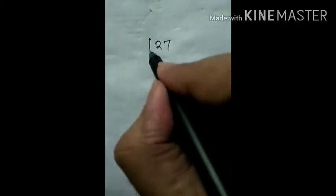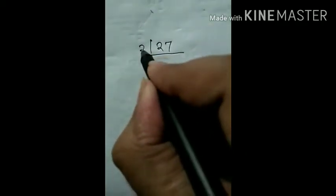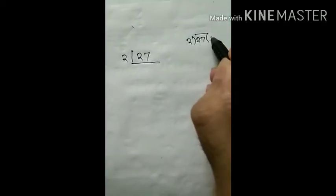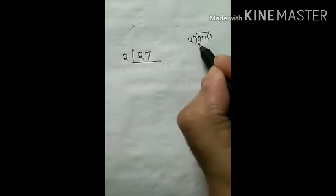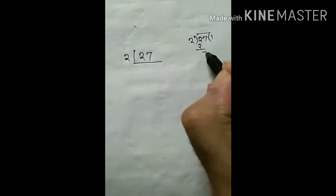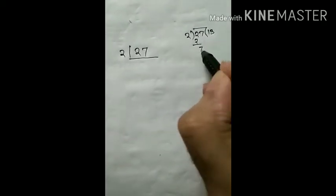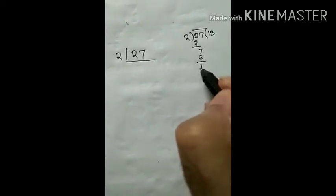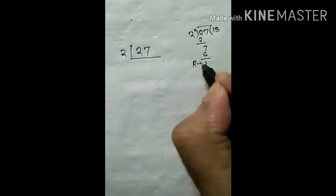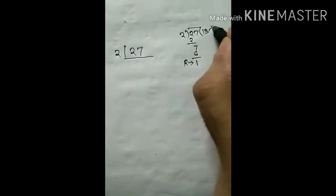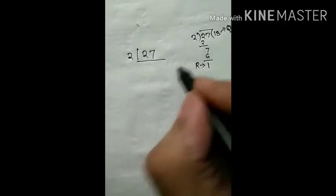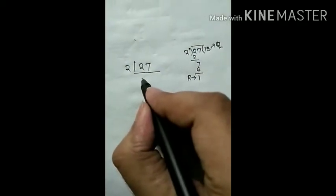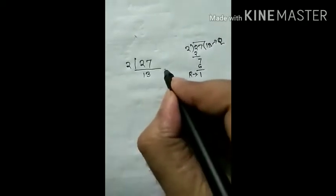So the first step is you have to divide it by 2. Here we can see the remainder is 1 and the quotient is 13. We write the quotient here and remainder here.